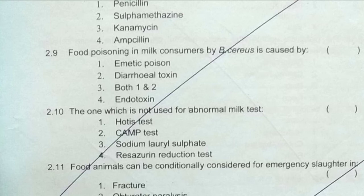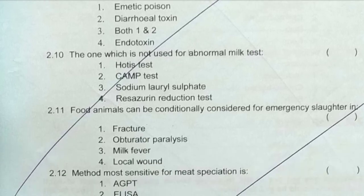Next question: food poisoning in milk consumers by Bacillus cereus is caused by — both emetic toxin and diarrheal toxin are responsible for food poisoning. Next question: which one is not used for abnormal milk test —